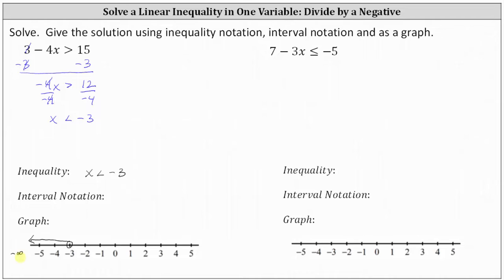Remembering this is helpful to write the interval notation. For interval notation, we have the interval from negative infinity to negative three. The interval does not include negative three, and therefore we use a parenthesis to the right of negative three. We always use a parenthesis next to negative infinity or positive infinity. So we have the open interval from negative infinity to negative three.